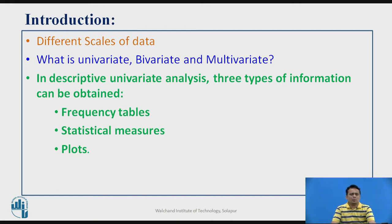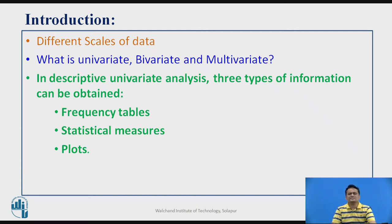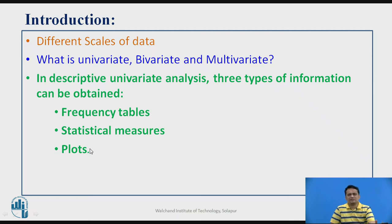Let us start with what are the scales for data representation. Your data analysis may depend on how many attributes you are analyzing. If you are analyzing only one attribute it becomes univariate, two attributes makes it bivariate, and more than two attributes makes it multivariate. Any analysis can be done using three approaches: a frequency table, statistical measures, or visualization using different plots.